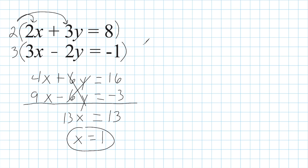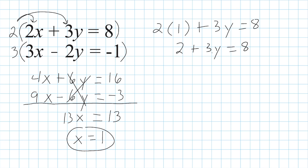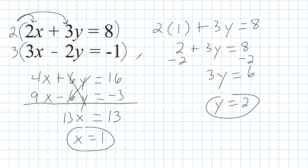Now that we know x equals 1, let's take the first equation and substitute x with 1 to solve for y. We have 2 plus 3y equals 8. Subtracting 2 from both sides gives 3y equals 6, and y equals 2 because 3 times 2 is 6. So the two lines intersect at the point (1, 2), which is in quadrant one because both values are positive.